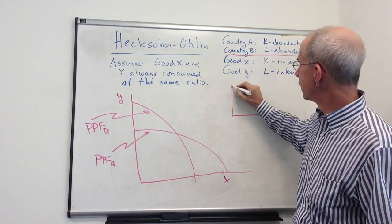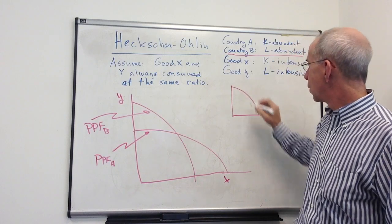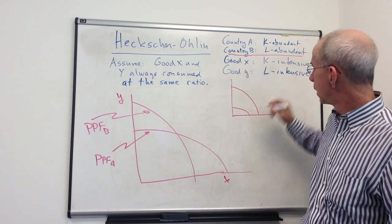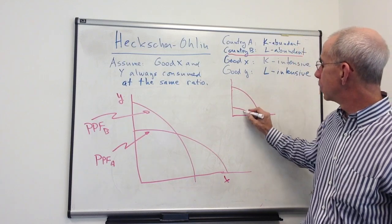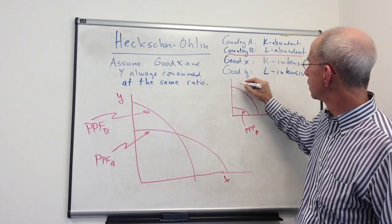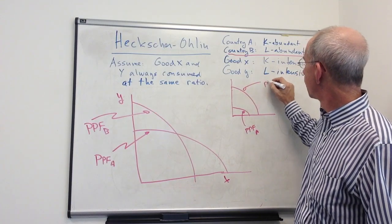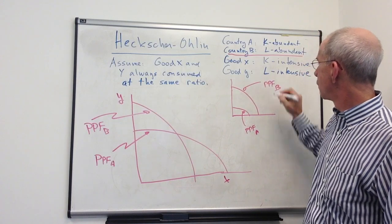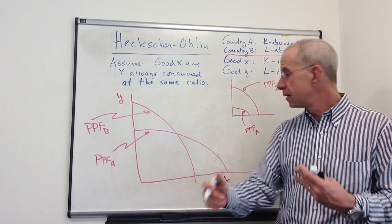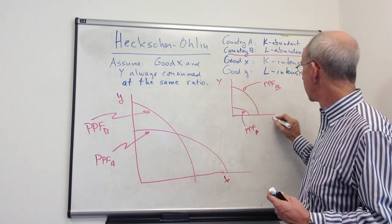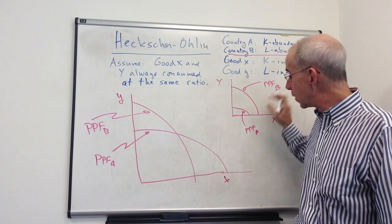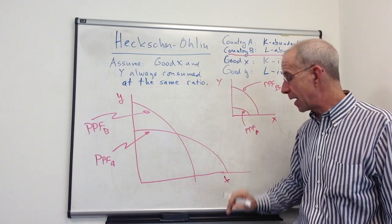So for example, just as a little bit of a digression, we could have two PPFs that look like this. This would be the PPF for country A. This would be the PPF for country B. A is skewed out more towards the capital intensive good. B can produce more of the capital intensive good, but it's the trade-off that matters.